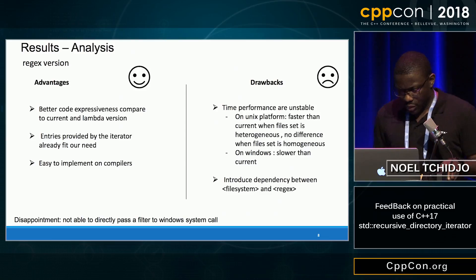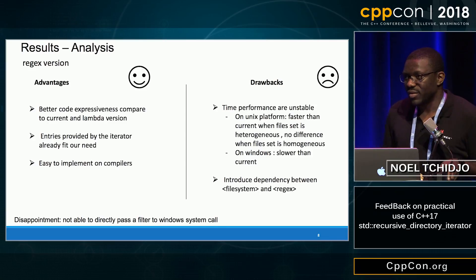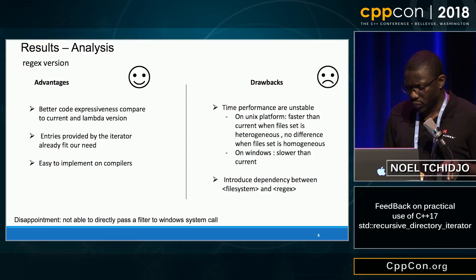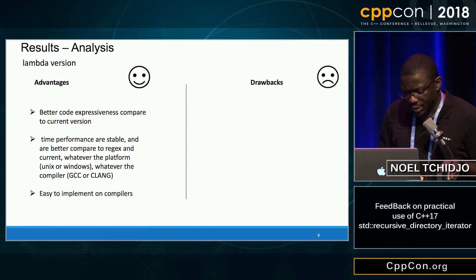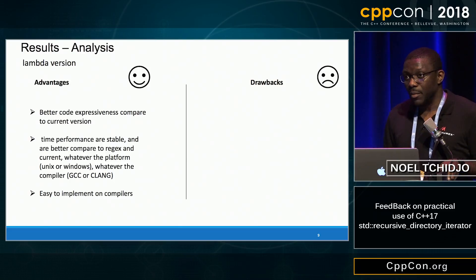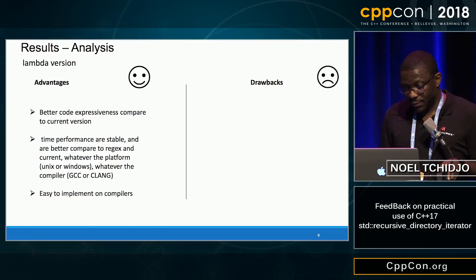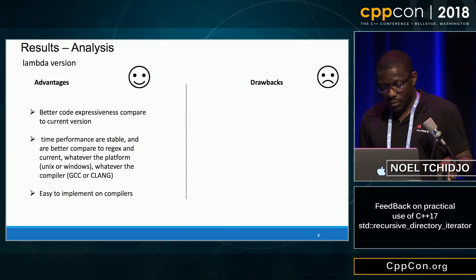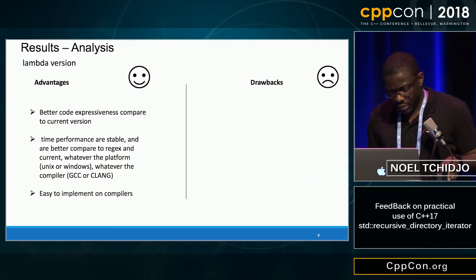Our disappointment was also being unable to directly pass a filter to Windows system calls, because when we create the regex, we cannot retrieve back the string we used to create it. For the lambda version, advantages were better code expressiveness compared to the current version, and time performance is stable and better than the regex version and current version. That is true whatever the platform — Unix or Windows — whatever the compiler, and whatever the open-source project when we run the program. It is also easy to implement in a compiler.